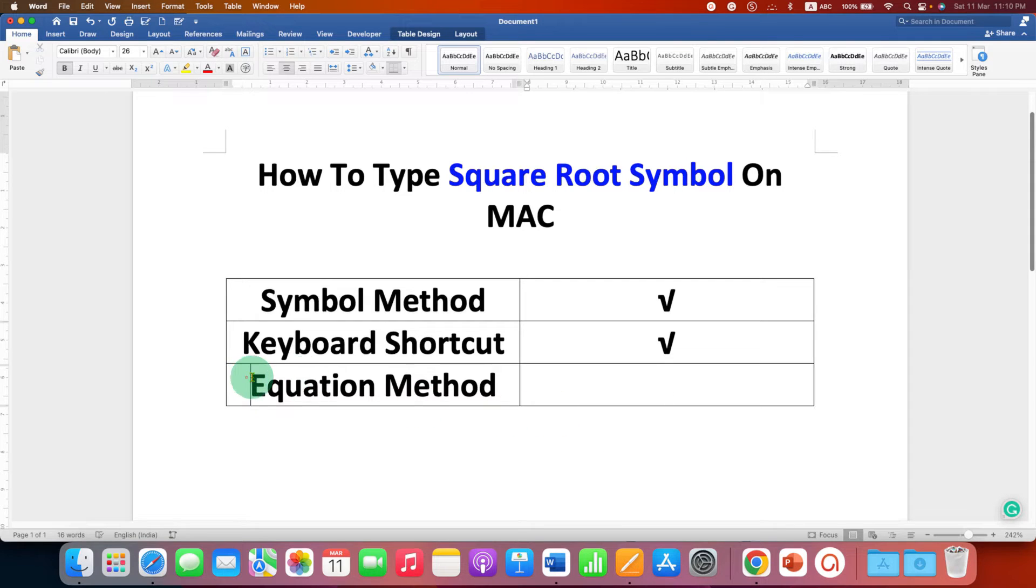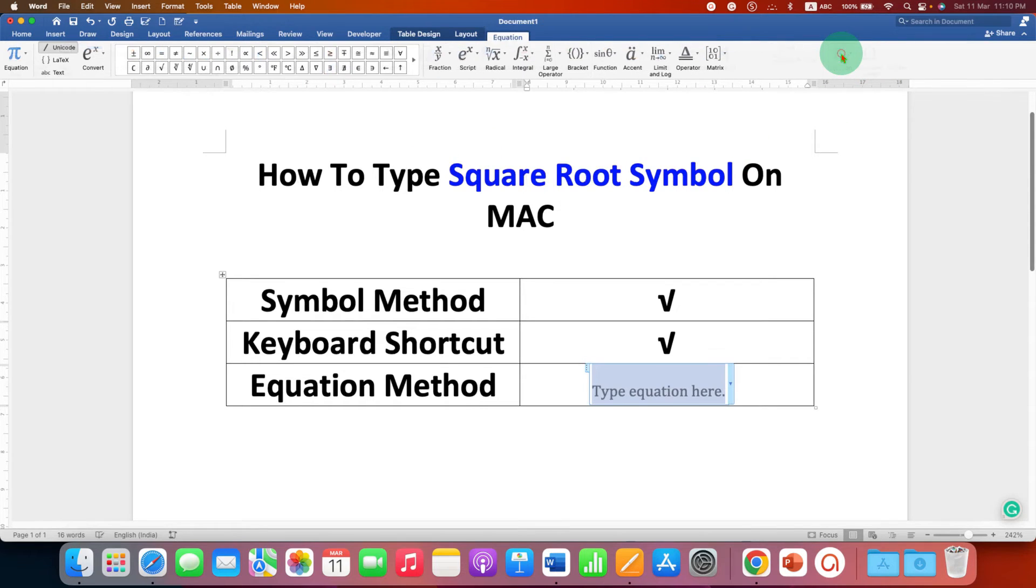Now this is a very important method. Usually this method is used to type square root symbol. In Microsoft Word, first you need to go to the Insert tab and then click on Equation, and you will see this blue box.